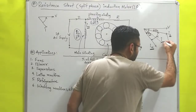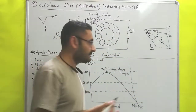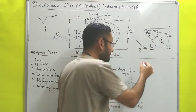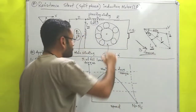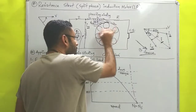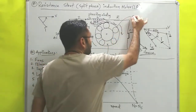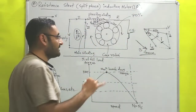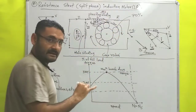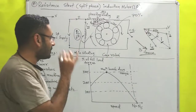We draw a parallelogram to find the resultant current I. This current produces a magnetic field according to Faraday's principle, and the magnetic field B is produced in a particular direction. This magnetic field creates a magnetic force on the rotor, causing the rotor to start rotating in the clockwise direction. When the rotor reaches 70 percent of its normal speed, the centrifugal switch opens, no current flows from the starting winding, and the rotor continues its rotation with the help of the main winding.